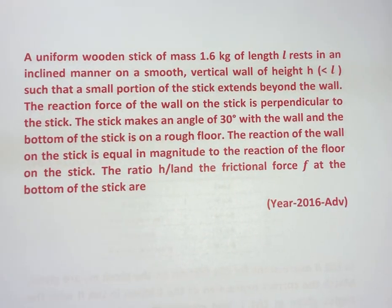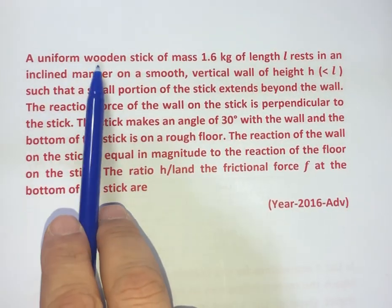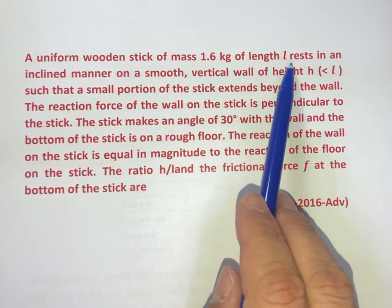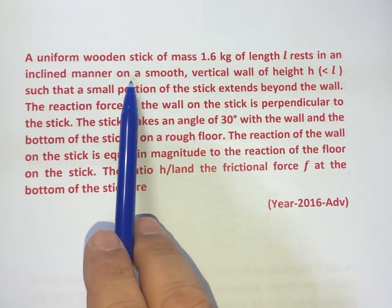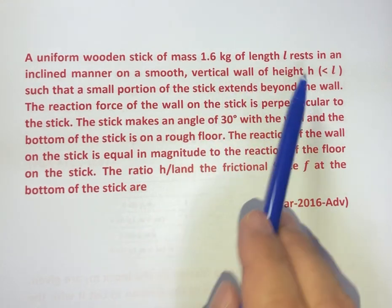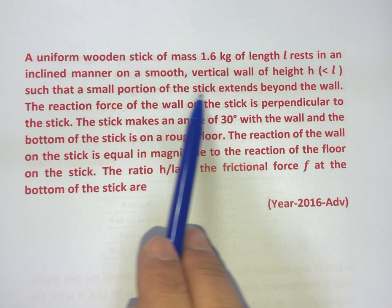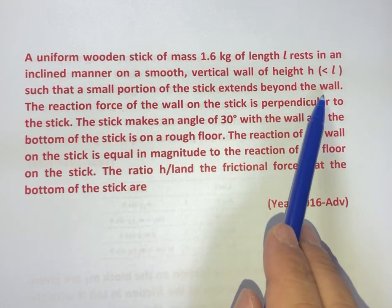Hello friends, today's question. A uniform wooden stick of mass 1.6 kg of length L rests in an inclined manner on a smooth vertical wall of height h, such that a small portion of the stick extends below the wall.